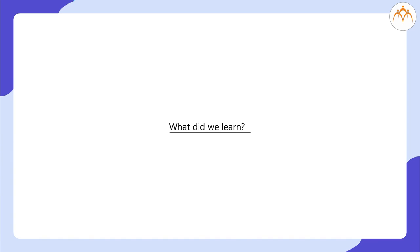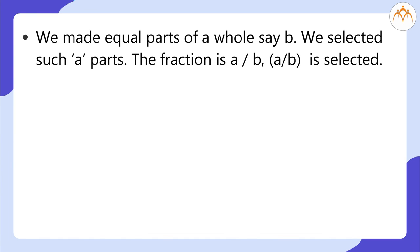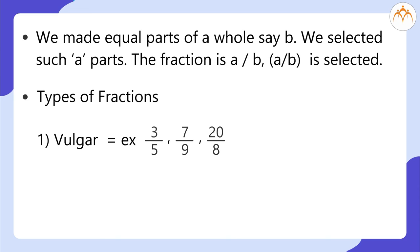Summary of what we learned: we made equal parts of a whole — say B parts — and selected A parts, giving the fraction A by B. Types of fractions: vulgar fractions (e.g., 3/5, 7/9, 20/8) — denominators are natural numbers other than powers of 10.